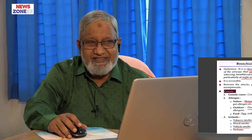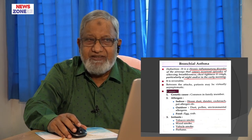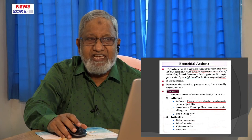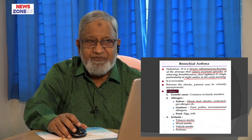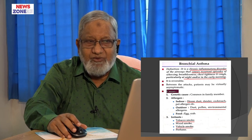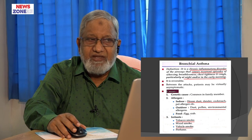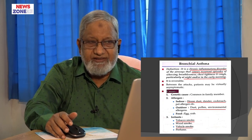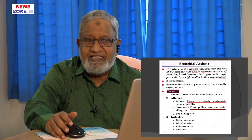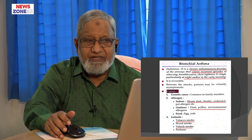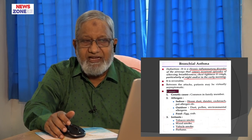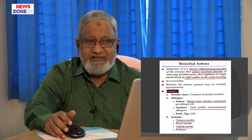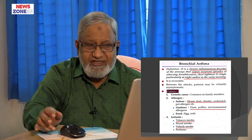Now I will discuss bronchial asthma. It is characterized by chronic inflammatory disorders causing recurrent episodes of wheezing, chest tightness at night or in the early morning. It is reversible, and between attacks the patient is virtually asymptomatic. Causes may be genetic — family history of bronchial asthma — allergens, indoor and outdoor allergens, environmental allergens, house dust, foods such as eggs and crabs.